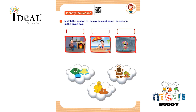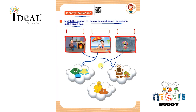Here the child has to match correctly with the clothes and name the season in the given box. First is winter season — the child has to match it with the clothes used in winter season. Next is summer season, then monsoon. After matching, the child has to write the name of the season on the top correctly — winter, summer, and monsoon. The children have to match the seasons with the correct clothes and complete it correctly. Thank you.